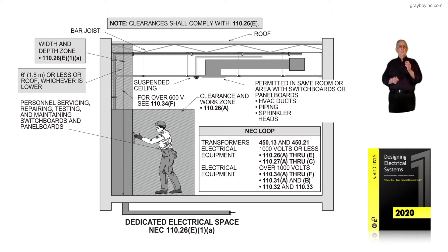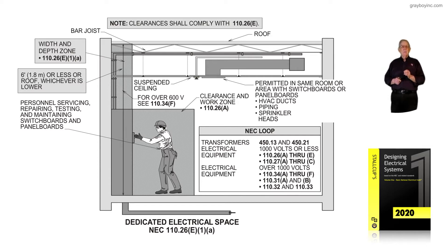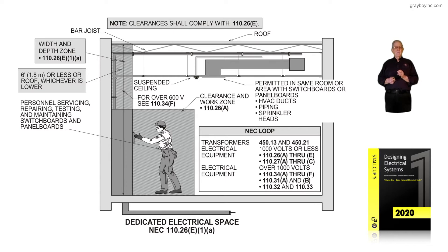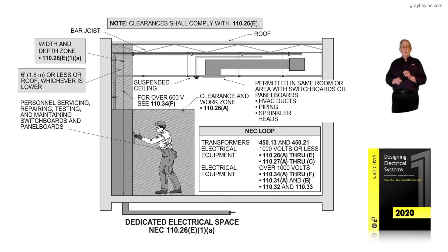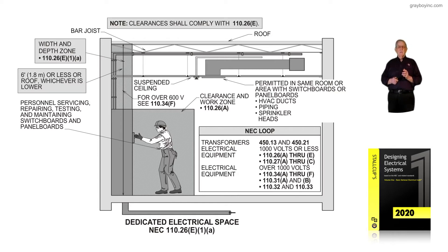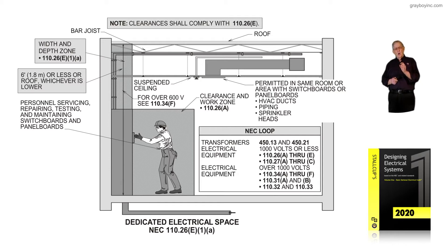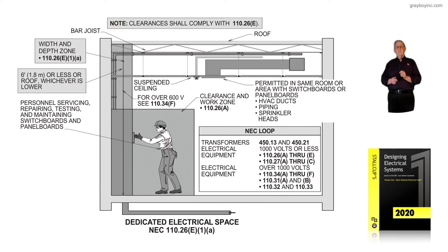Notice the width and depth zone is 110.26 E as in Ed, one little A, and then notice the six-foot rule or less above the electrical equipment is shown, and notice that six-foot goes all the way up to the roof level with a suspended ceiling installed between that six-foot, which is legal by code, and notice that it's over 600 volts in 110.34F if we use OSHA regulations.